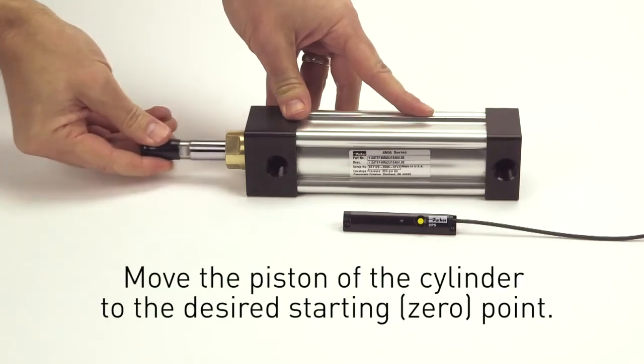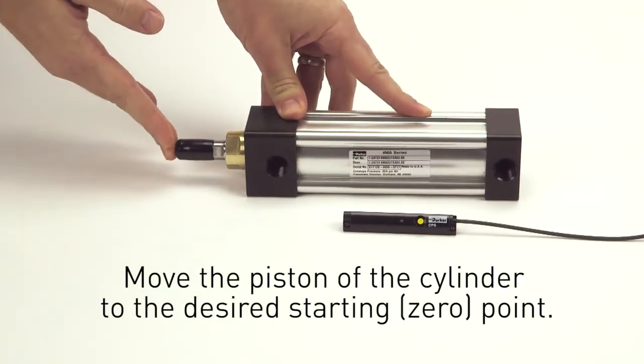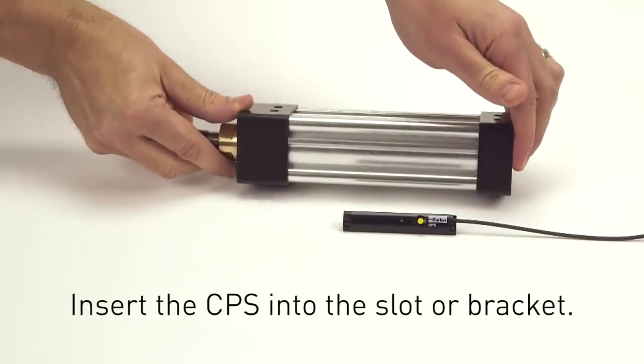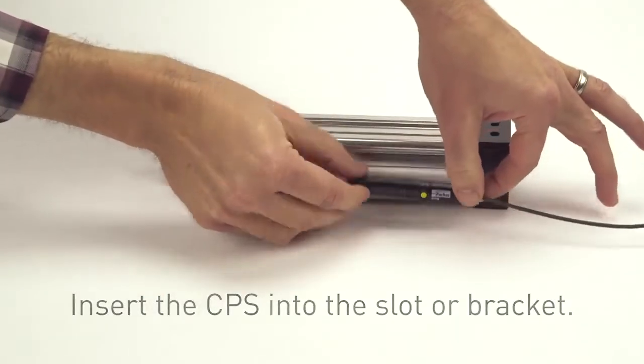Next, move the position of the cylinder to the desired starting point, also referred to as zero point, and insert the CPS into the slot or bracket with the cable pointing back towards the zero point.